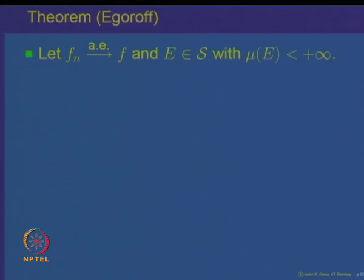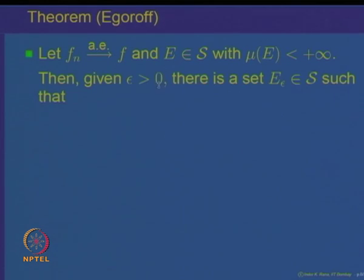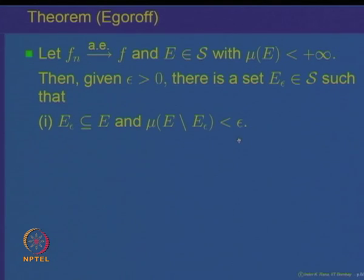As a consequence of this, we prove a theorem called Egorov's theorem. It says that if F_n converges to F almost everywhere and E is a set of finite measure, then given epsilon, there is a set E_epsilon such that mu(E - E_epsilon) < epsilon and F_n converges to F uniformly on E_epsilon.